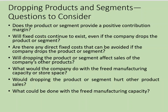First, the manager must ask if the product or segment provides a positive contribution margin. The manager must also determine if the fixed costs will continue to exist even if the company drops the product or segment. Are there any direct fixed costs that can be avoided if the company drops it? Sometimes we are able to avoid some costs if we drop a line. Or will dropping the product or segment affect sales of the company's other products?